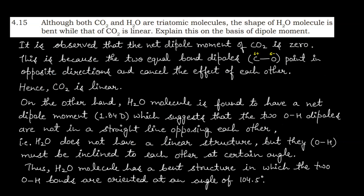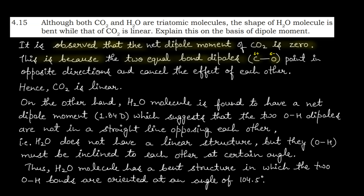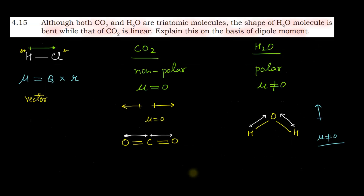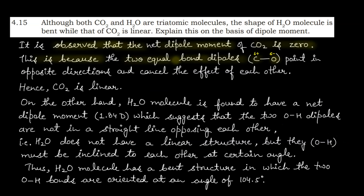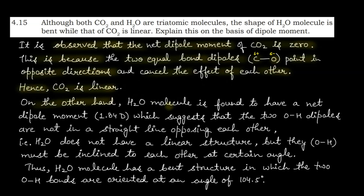Sample answer: It is observed that the net dipole moment of CO2 is 0. This is because the two equal bond dipoles — the C=O bond dipoles — point in opposite directions and cancel the effect of each other. Hence CO2 is linear.